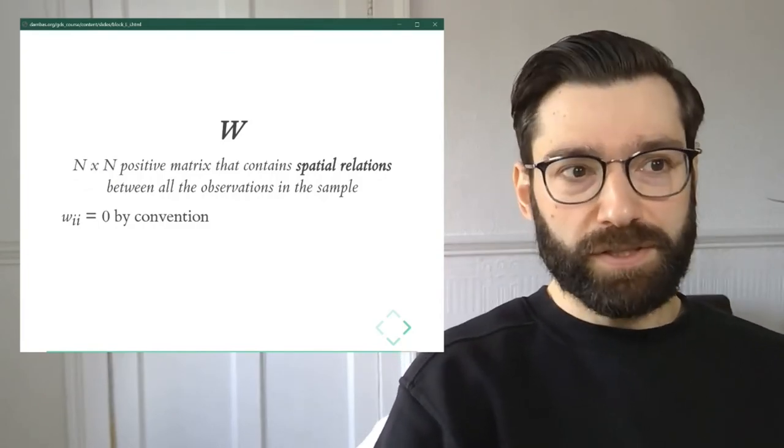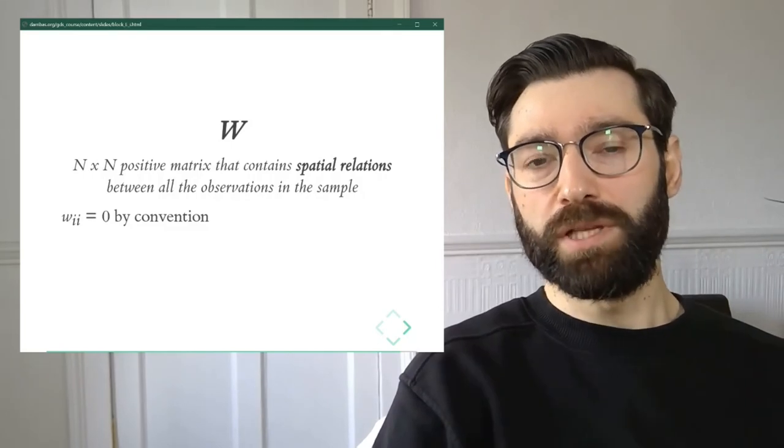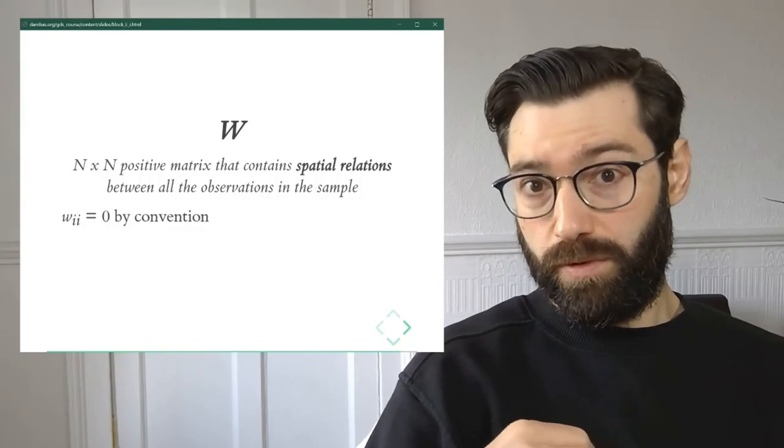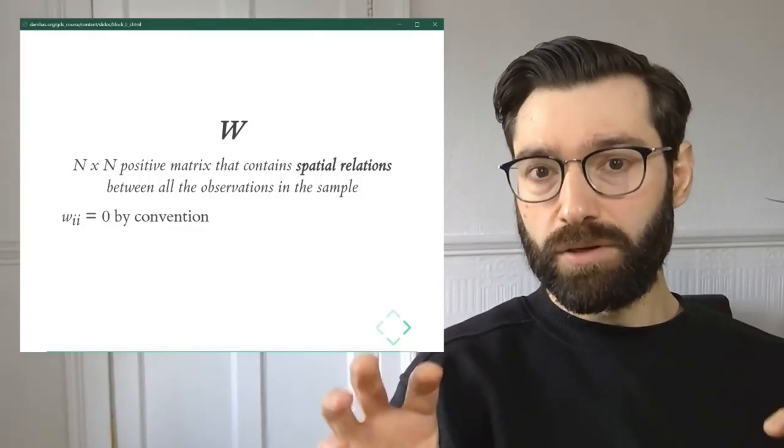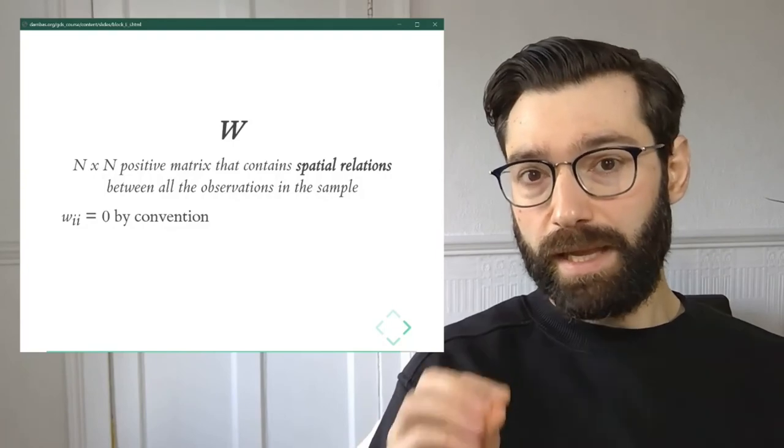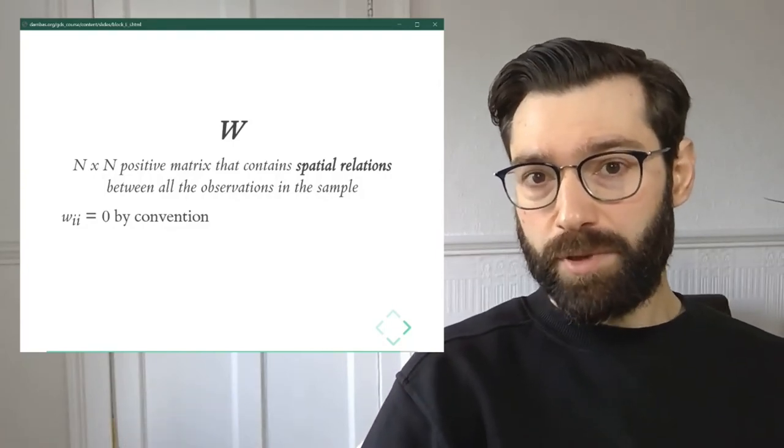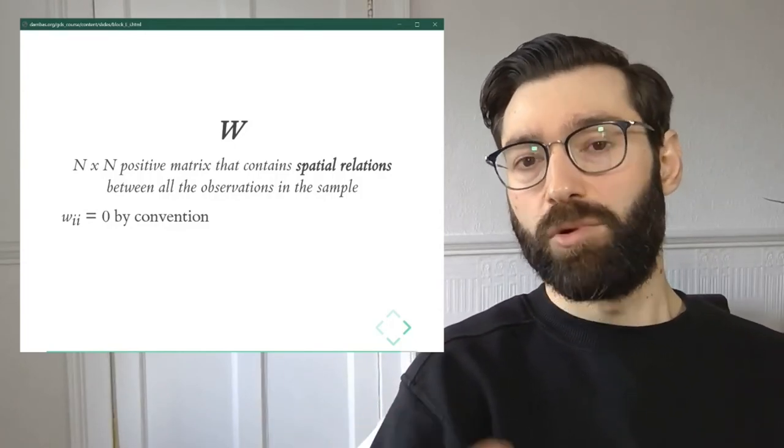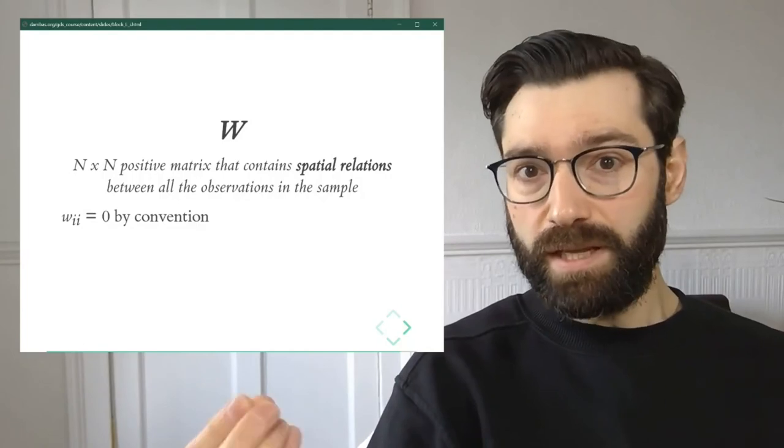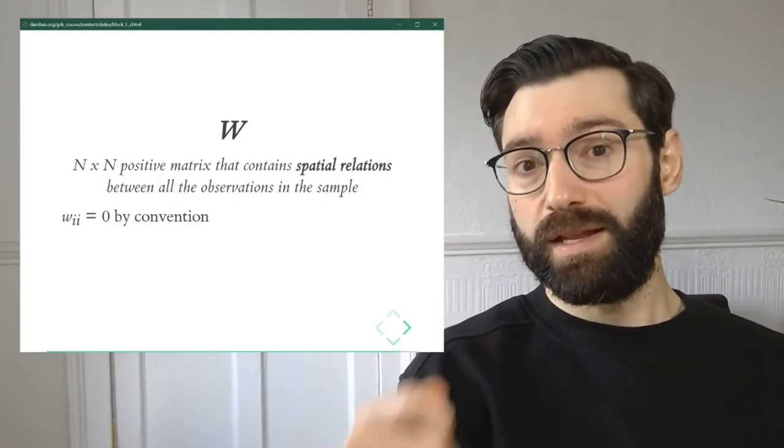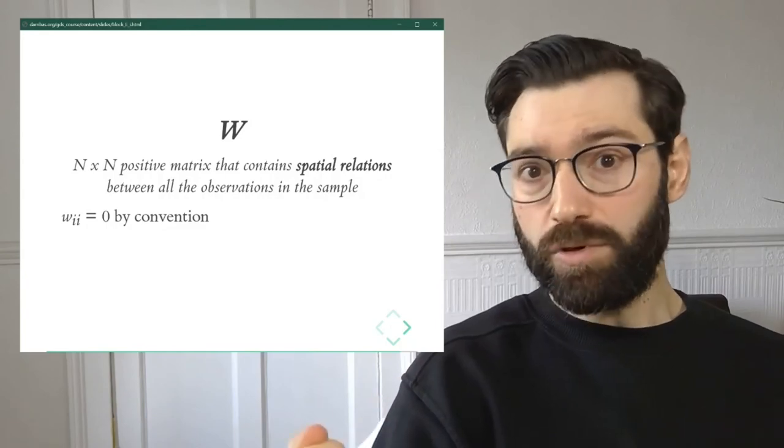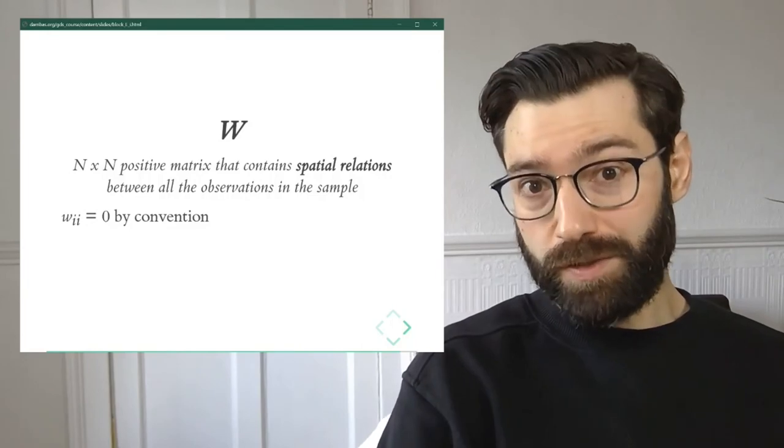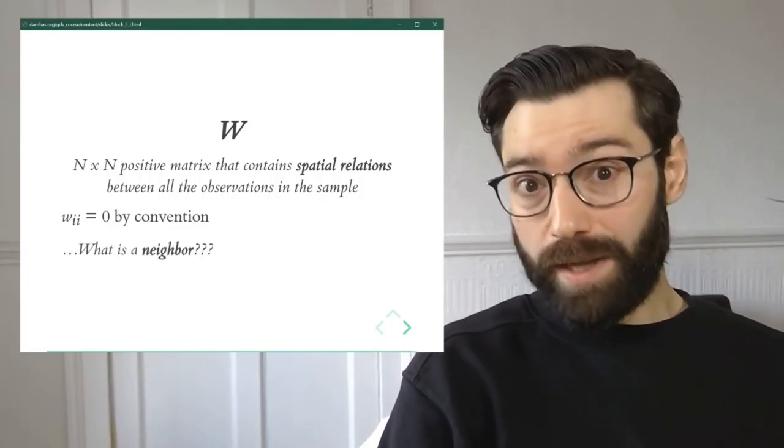Now, in this definition that I've just spelled out of a spatial weights matrix, I've always been discussing whether an observation is a neighbor of another one or not. And I've said the trick to convert spatial relationships into values or numbers is mediated through this idea of is an observation a neighbor of another observation. And if it is, we're going to assign a number or a weight that is larger than zero. And if they're not neighbors, then we're going to assign a zero. Now, of course, the elephant in the room and the big question here that I haven't answered is, what is a neighbor?